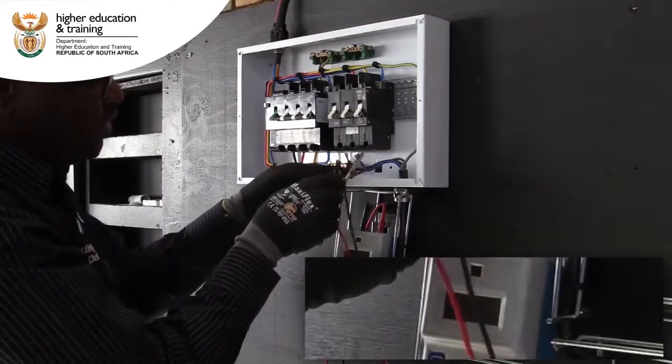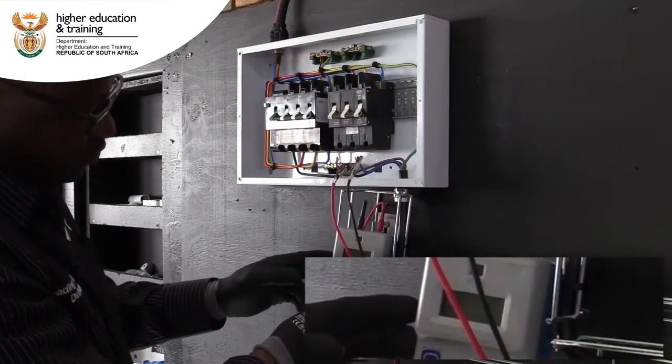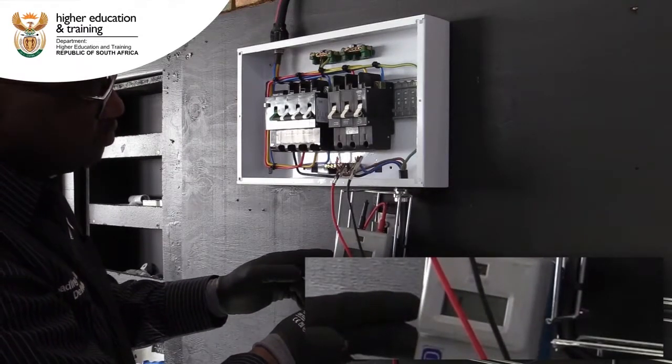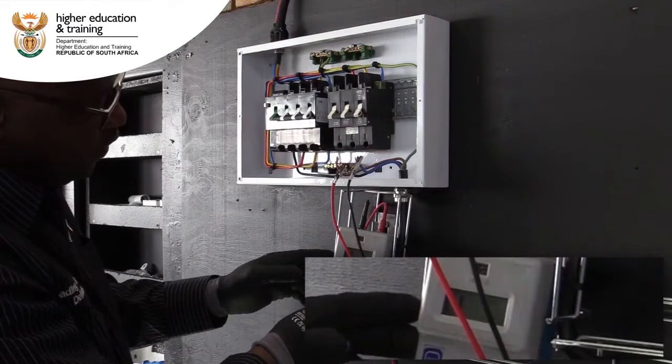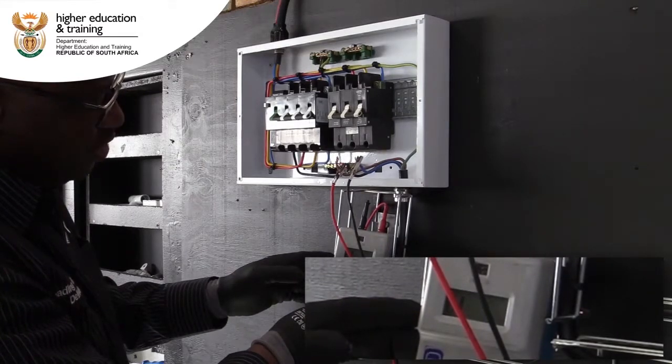Lastly, we will be testing line 2 and line 3. Line 2 and line 3, we also get infinite. It means there is no short circuit. Our cable is clear.